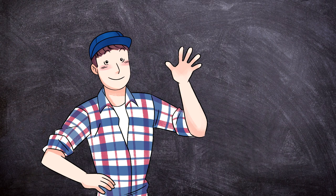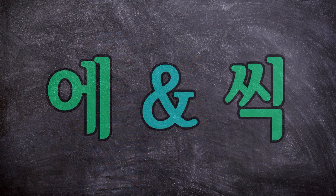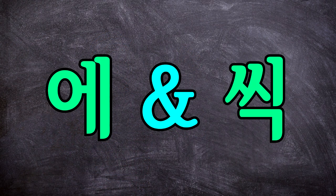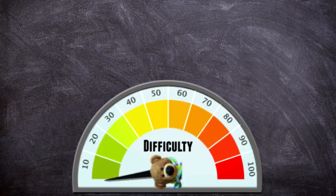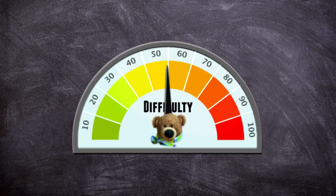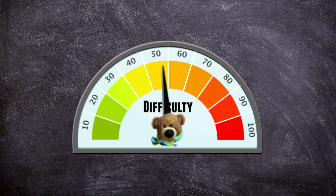Welcome back. In this lesson, we're going to cover two grammar forms that are often used together: the particle 에 and 씩. Before we start, I should give you a disclaimer that this lesson is for intermediate level learners and might be a bit difficult for beginners to use in their sentences. But don't let me tell you what to do.